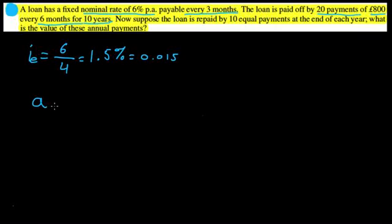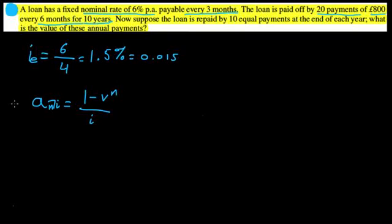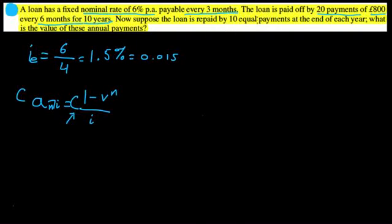We have our annuity formula, which looks like: (1 minus v to the n) divided by i, multiplied by some cash flow amount C. In this case the payments are £800, and we want to know what C would be if instead they paid annually — 10 payments over 10 years — rather than 20 payments twice a year over 10 years.